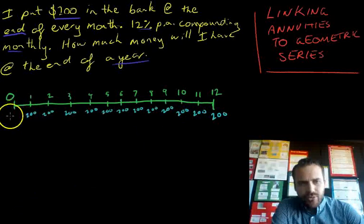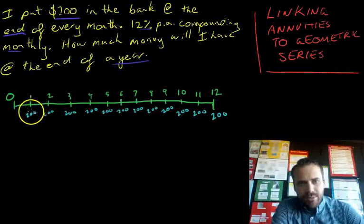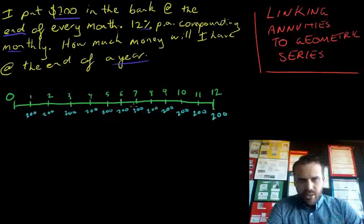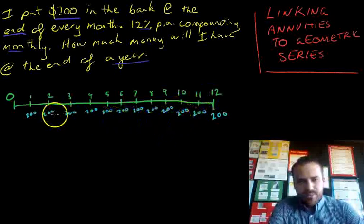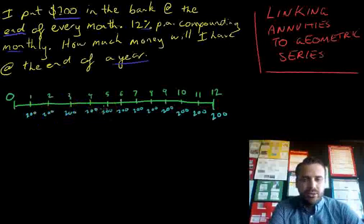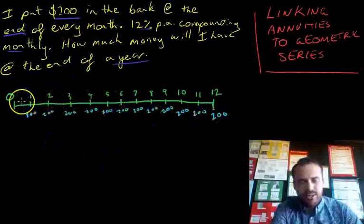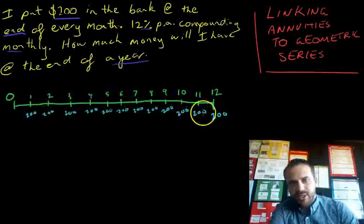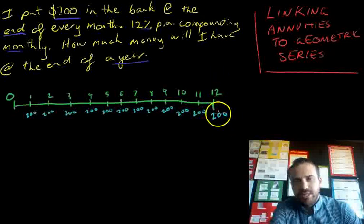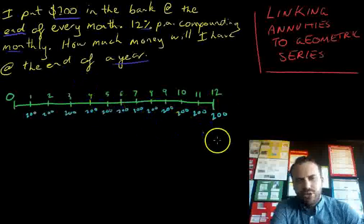Notice I'm not putting two hundred at the start — that's because you put two hundred dollars in the bank at the end of every month, so it happens here, here, here, here. There should be twelve deposits along there. You can think of each of these two hundred dollars as their own individual bank account. At the very end of the time you put two hundred bucks in on the very last day. Let's look at the future value.